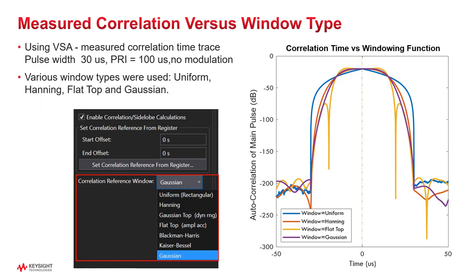Sometimes the rising and falling edges of your pulses are not going to be smooth. Windowing can help give you a cleaner output of your matched filter. Without any modulation, we tried different windowing functions that may be applied to sharpen up the main lobe and suppress the side lobes. The Gaussian window seems to have a pretty good trade-off between main lobe versus side lobe, but the best choice for you is going to be signal-specific.